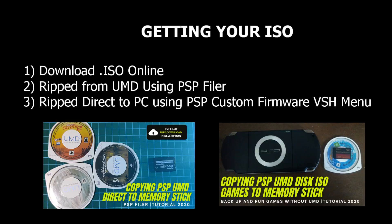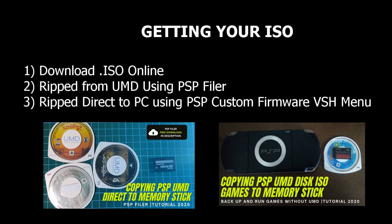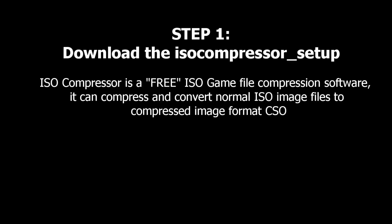There are several ways for you to get your ISO. You can download it online by searching for .iso, or you can get them by copying it from your UMD disk. I've included a link in the description on how to copy your UMD disk.